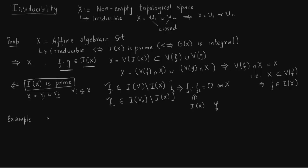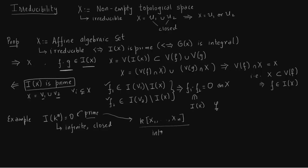Now a quick example. The ideal I(K^n) equals zero — this we have shown before for K infinite. Note that if K is finite then this ideal may not be zero. This zero ideal is prime because zero is contained in the ring K[X1, ..., Xn], and this ring is an integral domain. Since the ring itself is integral, zero is the prime ideal.